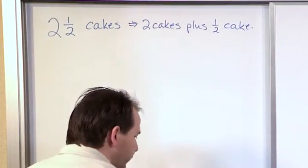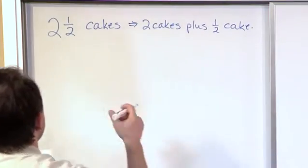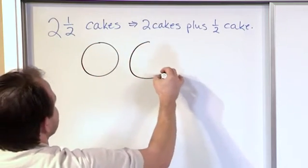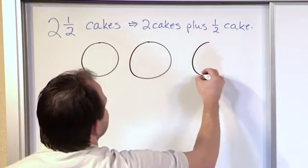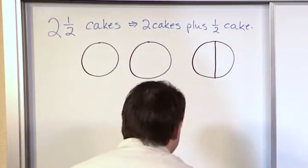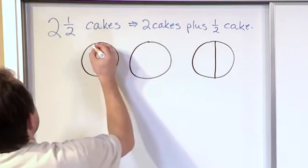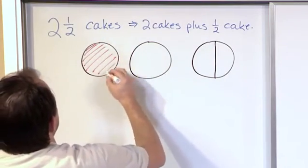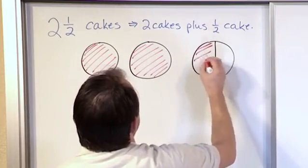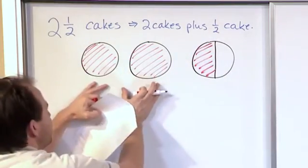So if I wanted to draw that, just to quickly show you, if I had two and a half cakes, here's cake number one, here's cake number two, here's another cake that I'm going to end up cutting in half. Now if I wanted to represent two and a half cakes, then what I have is this is the first cake, this is the second cake, and here's the half a cake. So that's two and a half.